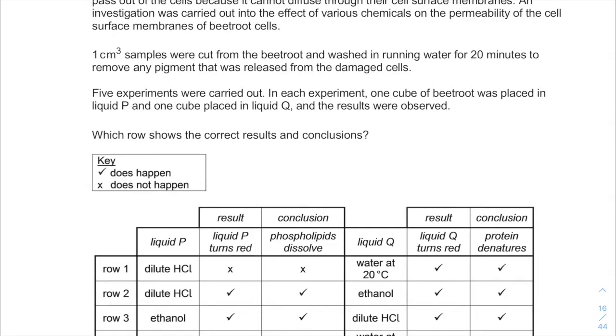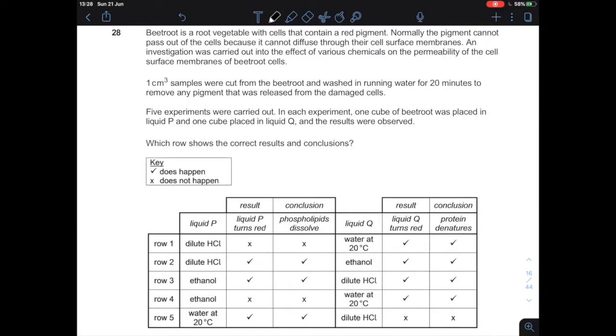These questions might look scary, but it's very straightforward and can be solved using an elimination method. Beetroot is a vegetable with cells that contain a red pigment. Normally, the pigment cannot pass out of the cells because it cannot diffuse through the cell surface membranes. An investigation was carried out into the effect of various chemicals on the permeability of the cell surface membranes of beetroot cells. 1cm³ samples were cut from the beetroot and washed in running water for 20 minutes to remove any pigment that was released from the damaged cells.